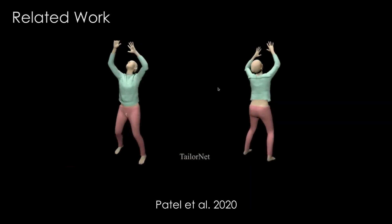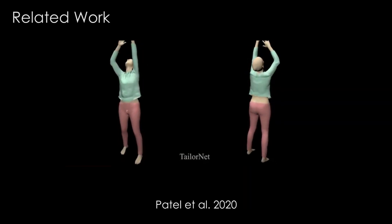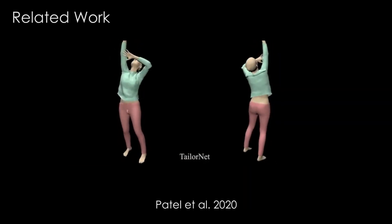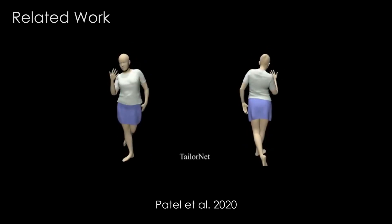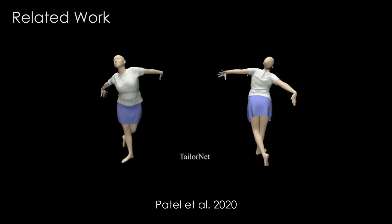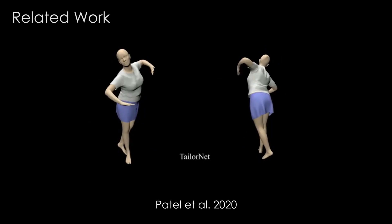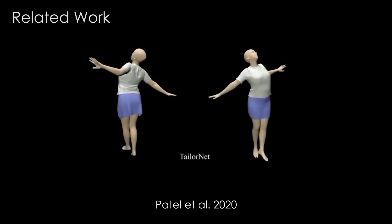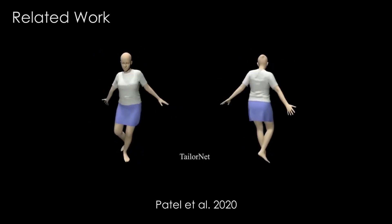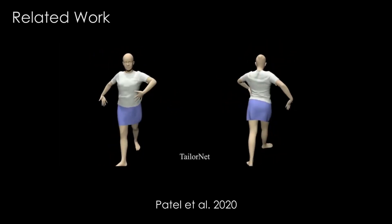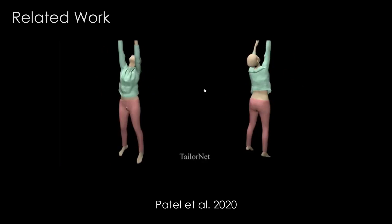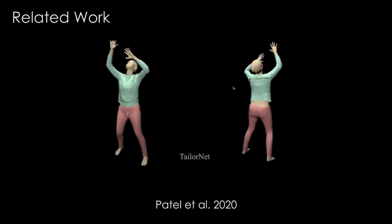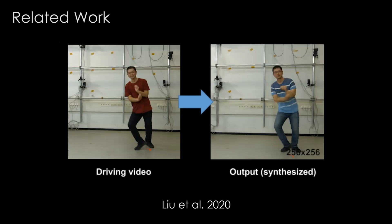Another line of work tries to learn from a large database of simulated clothes. While they can generalize across clothing categories and achieve faster runtimes than physics simulations, the realism is still limited to the quality of training data generated by the physics engine. All have in common that they only model geometry, but not texture.